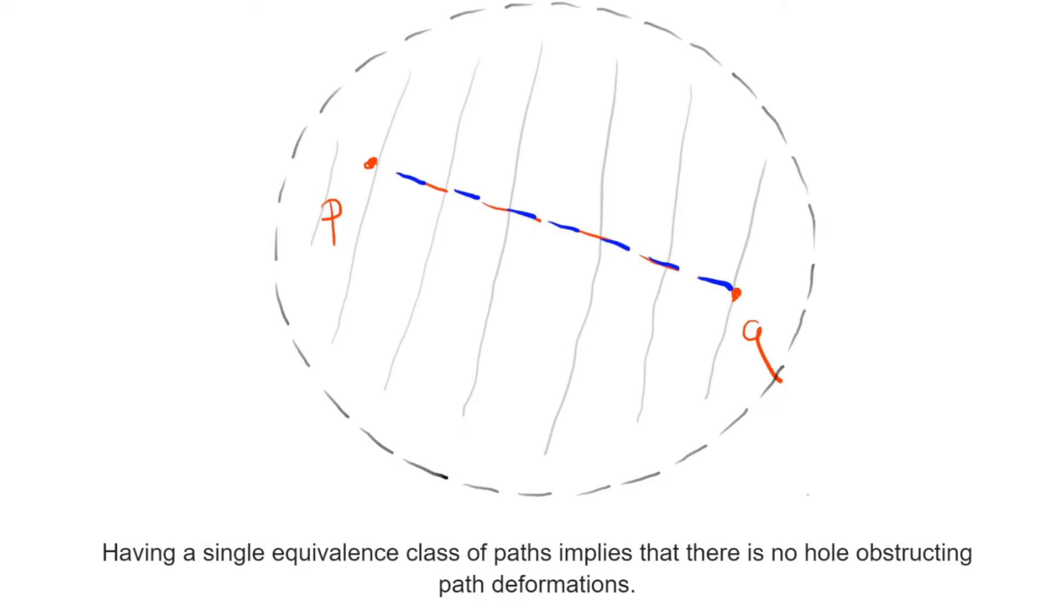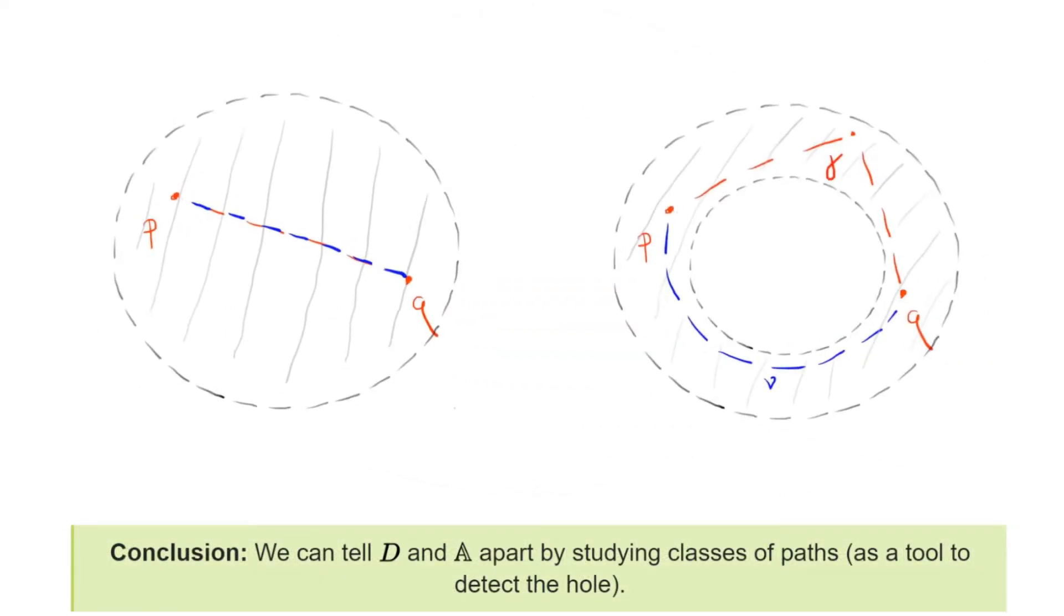Up to checking formally everything that we've claimed so far, we are actually done. We've proven that D and A are not homeomorphic to one another, and we did this by formalizing the idea that A has a hole in the middle.